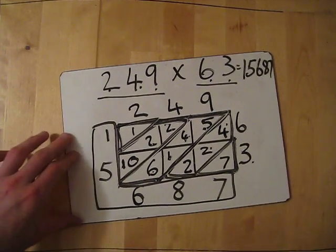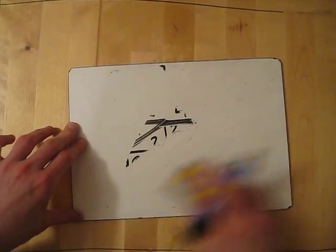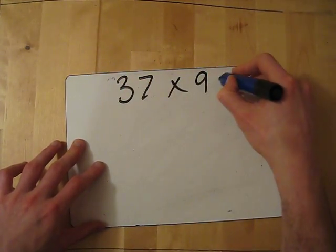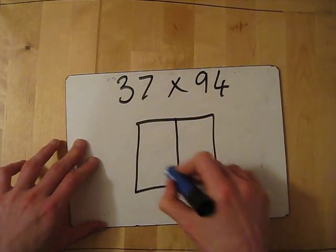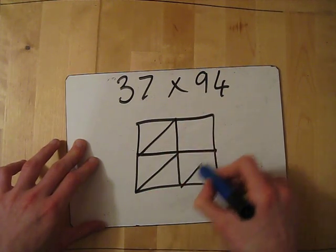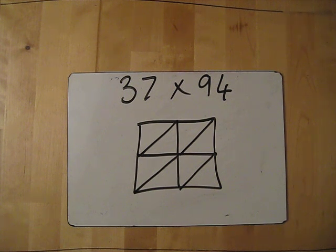So, if you want to, what I'm going to do in this one is I'm going to write out a question. 37 times 94. I'm going to draw out the grid. If you want to try this yourself with a piece of paper and see if you get the answer, you want to pause the video now and then have a go at it yourself and then unpause it whenever you would like to see me actually going through this one.